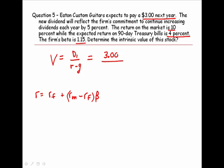Remember, the required rate of return using capital asset pricing model is the risk-free rate plus the return on the market minus the risk-free rate times the beta of the stock. Our risk-free rate is 4%, the return on the market is 10%, and the beta of the stock is 1.15.